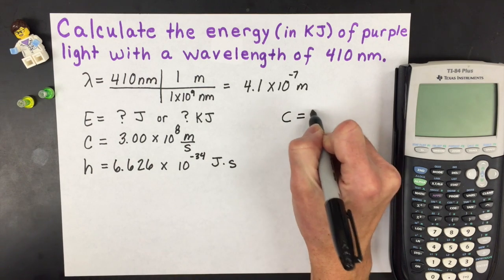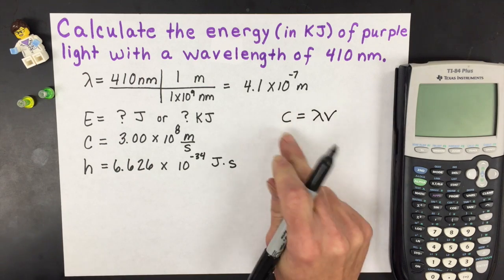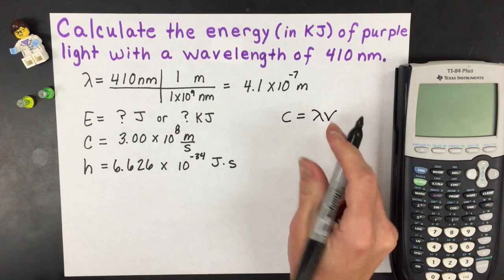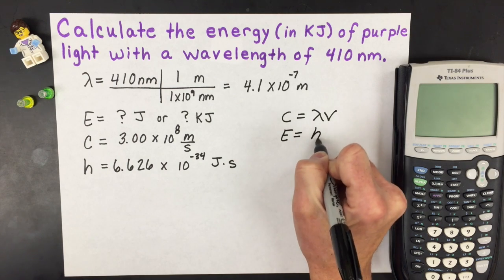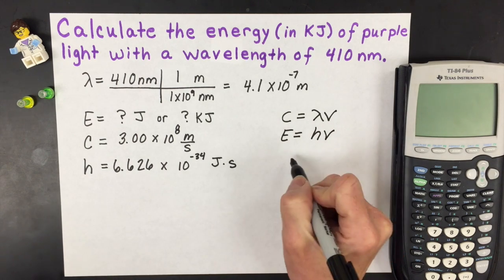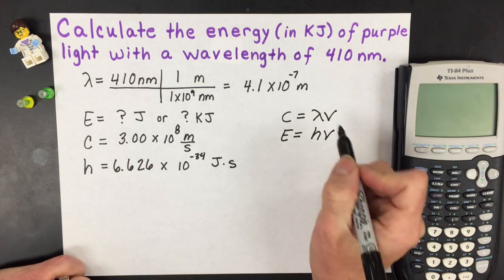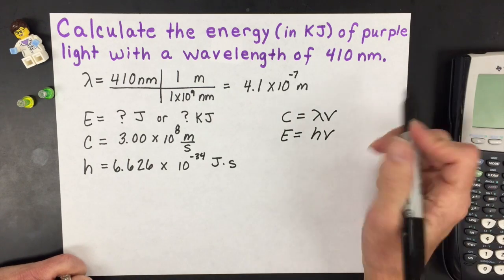We have our typical equations. We have speed of light equals lambda times nu, which is wavelength and frequency. We've got this other equation where energy is related to Planck's constant and frequency. And if you put these two equations together, you can make a third equation.